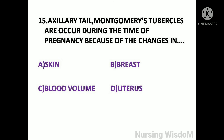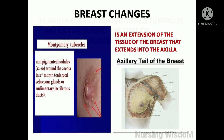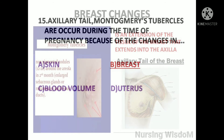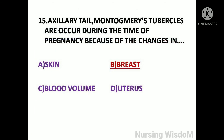Next question: Axillary tail and Montgomery's tubercles occur during pregnancy because of changes in — option A: skin; option B: breast; option C: blood volume; option D: uterus. Montgomery tubercles are non-pigmented nodules around the areola in the second month — enlarged sebaceous glands or rudimentary lactiferous ducts. The axillary tail of the breast is an extension of breast tissue that extends into the axilla. So here the answer is option B, breast.